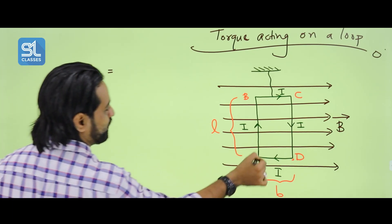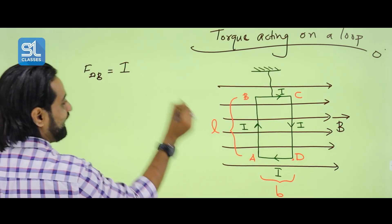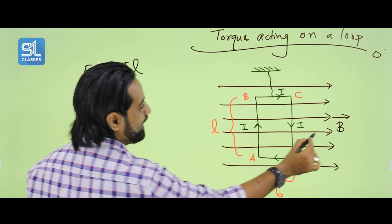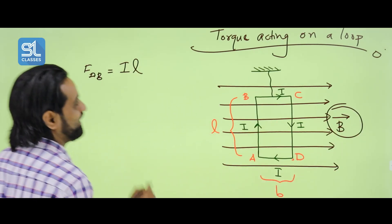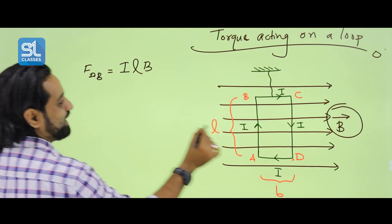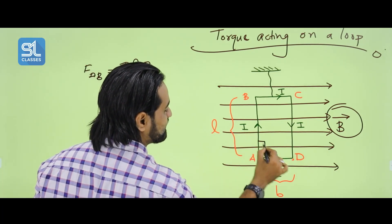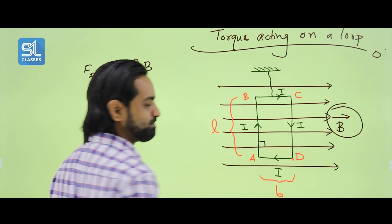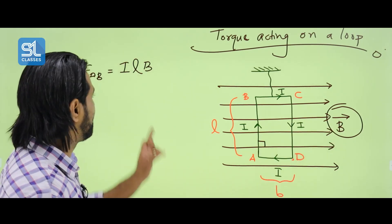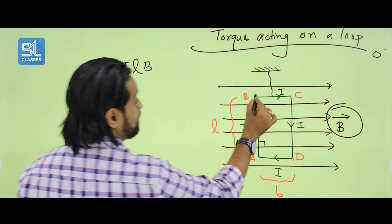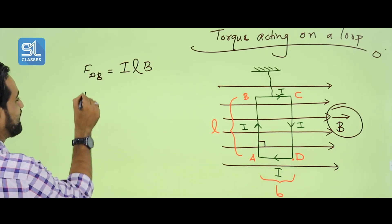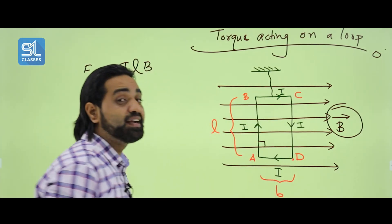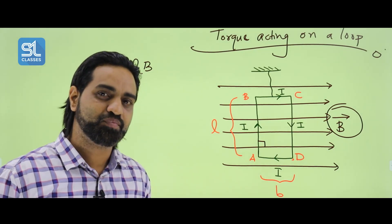That force is F = ILB. For side AB, the force is calculated using F = ILB sinθ. Since the conductor is perpendicular to the field, sin90° = 1. Force on BC: since this side is parallel to the magnetic field, sin180° = 0, so the force is zero.